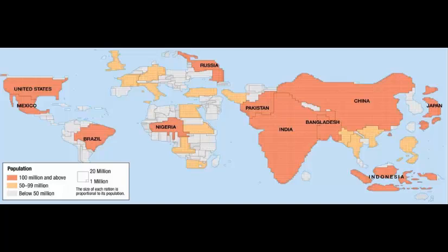The first thing that stands out is Asia. Look at Asia — that's where the bulk of the world's population is living, and it shows that population is not evenly distributed throughout the world.